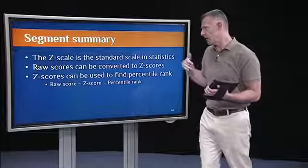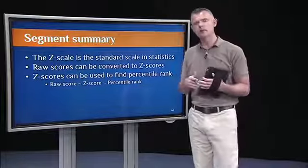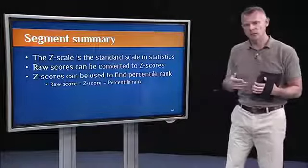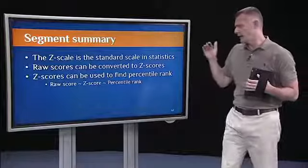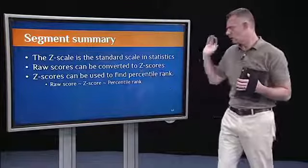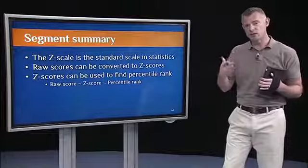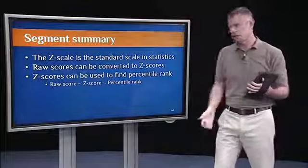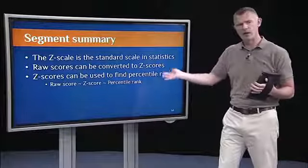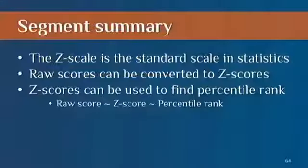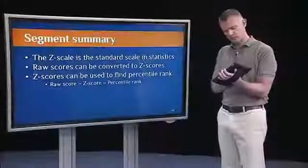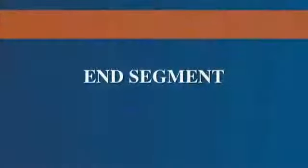So to sum up, the Z scale is the standard scale that we use in statistics. It's very efficient, it's very nice for communication. I can take any raw score, convert it to a Z score, and once I have a Z score, I can get a percentile rank. So these conversions are very common in statistics. And at this point, you should be comfortable doing those types of conversions. And we'll do those in lab, and perhaps on the next homework. And that's the end of this segment.